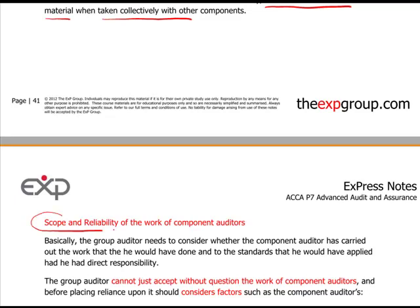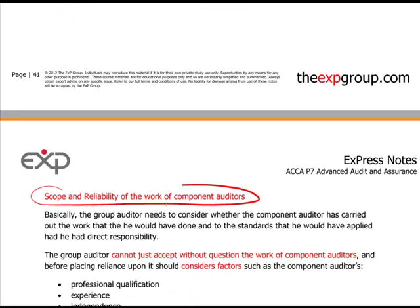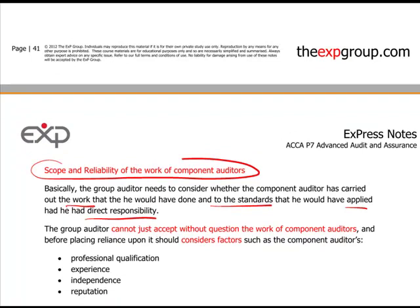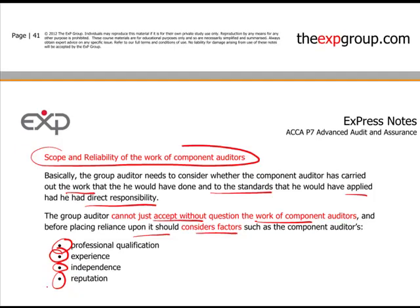The final element of AIMS is Scope — the scope and reliability of the working component auditors. Basically, you need to consider whether the component auditor has carried out their work to the same standards that you would have applied if you had done it yourself. That's what's key. You just cannot accept their work without question before you place reliance on it. The things you must consider are: their professional qualification — do they have any, and if so, what is it? How long have they been working as a firm or as an individual? What experience they've got of the client's industry? Are they independent — not only at the start of the audit, but at the end? Do they still have an independent relationship with the audit client? And what is their reputation like in the industry, in that country? You can find these things out if you have an inquiring mind, which as a group auditor you need to have.